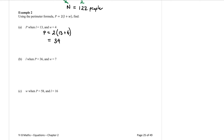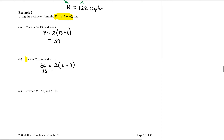Let's go on to part b. Now we want to find l if we know that p is 36 and w equals 7. Using the same formula, this time I am told the p. So instead of p, we substitute in 36: 36 equals 2 bracket l — I don't have a value for l so that letter stays in — plus w, but w is 7, so l plus 7. Close brackets. To solve for l, we expand the brackets: 36 equals 2l plus 14.